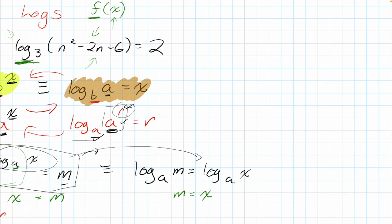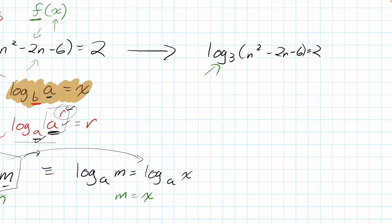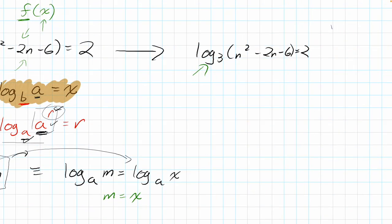Now let's get back to the original question: log base 3 of (n² − 2n − 6) = 2. We have a log and we want to get rid of it. In mathematics, whatever we do to one side we do to the other — we multiply, subtract, divide both sides. What we haven't encountered yet is raising both sides to a base. For example, if x = 5, I can raise both sides to base 2: 2^x = 2^5, and x is still 5.